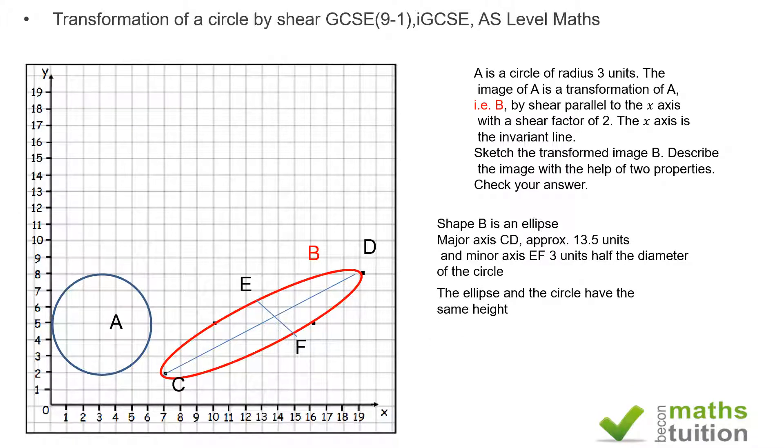Furthermore, both the ellipse and the circle have got the same height. The y-coordinate there is 2, the y-coordinate there is 8, so from there to there the height is 6, and that's the same as the diameter of the circle.